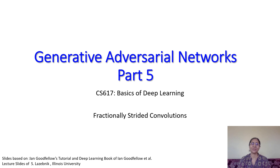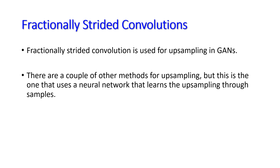Hello and welcome to part 5 of Generative Adversarial Networks. Today we shall be discussing fractionally strided convolutions, which are used for upsampling. GANs use a latent variable or latent sample to generate data samples that are as real as possible. From this low-dimensional latent vector we generate samples which can be images or any other data. For doing so we use upsampling through fractionally strided convolution. There are other methods like bilinear interpolation or cubic interpolation, but this is the one that uses a neural network that learns upsampling through the samples provided to it.